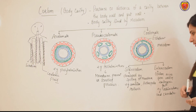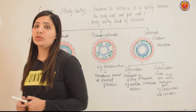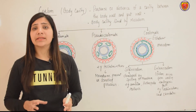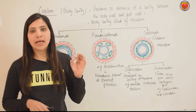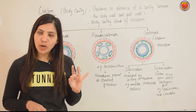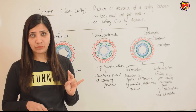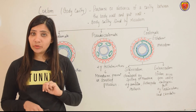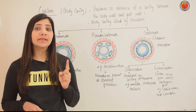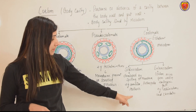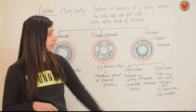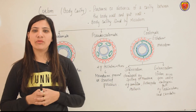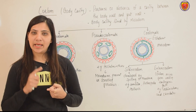Schizocoelom and enterocoelom are different. The schizocoelom is developed by the splitting of mesoderm — examples include Annelida, Arthropoda, and Mollusca. In Annelida, examples are Nereis, earthworm (Pheretima posthuma), and leech (Hirudinaria). These are true coelomates. So the schizo-coelomates are developed by the splitting of mesoderms.